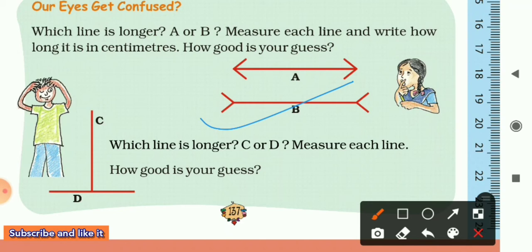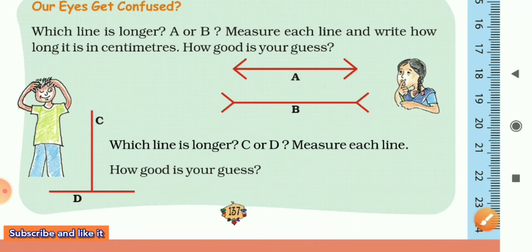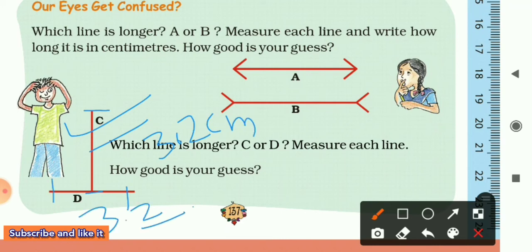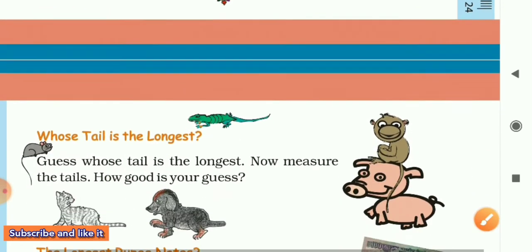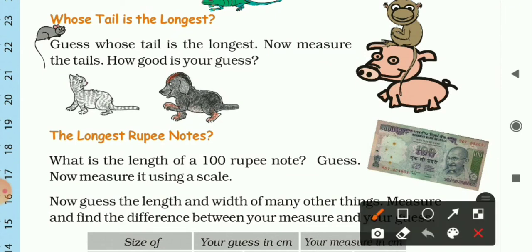Now another one: which line is longer — C or D? This is line C and this is D. In first view, anyone can see that C is longer, but it's not true. The endpoints of line C — I measured it and found it was only 3.2 centimeters, and D was also 3.2 centimeters. So C and D are both the same, both are equal.